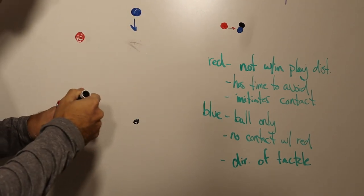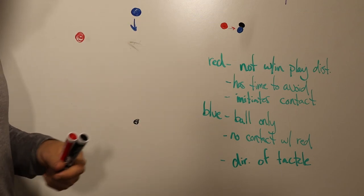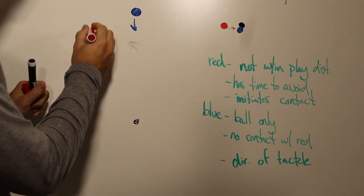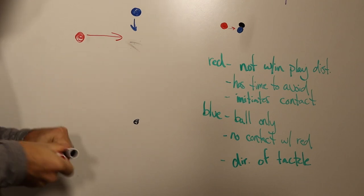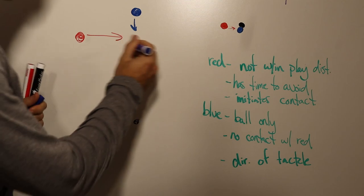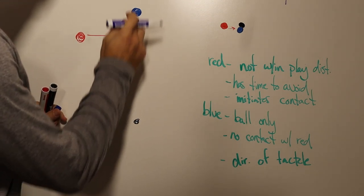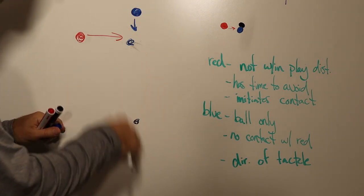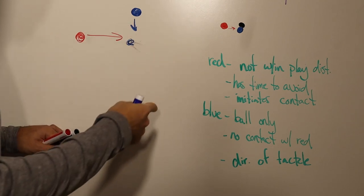Then red continues to go forward and doesn't check their momentum and red hits into blue who's now down on the ground because he just slide tackled the ball. Blue goes from here to here after he gets the ball and then red comes in and falls over blue.